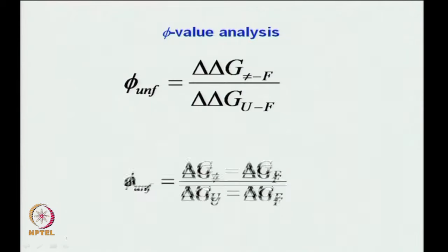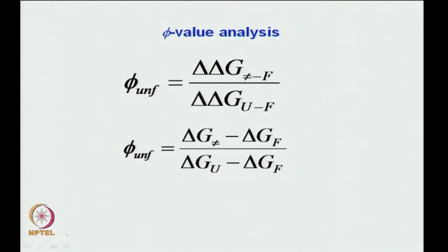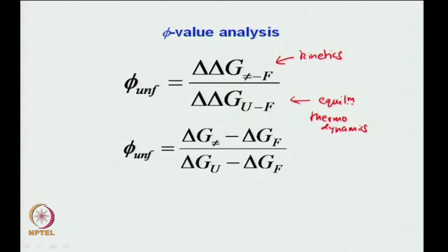The top term is related to the transition state. The bottom term is related to equilibrium — essentially the difference between the unfolded and folded state between the two proteins, one being the wild type and the other the mutant. So phi unfolding equals the change in the barrier minus the change in the folded state in the numerator, and delta G_U minus delta G_F in the denominator. The bottom comes from equilibrium thermodynamics; the top we get from kinetics.